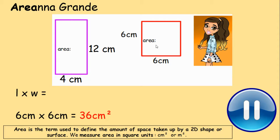For the second shape, I'm going to multiply 6 centimetres by 6 centimetres, which gives me 36 centimetres squared. The area of the second shape is 36 centimetres squared.